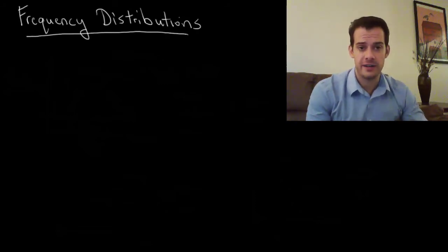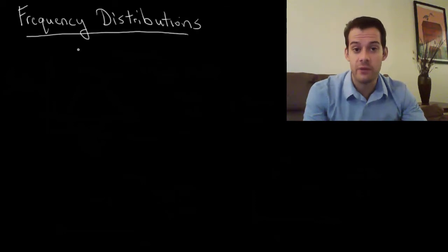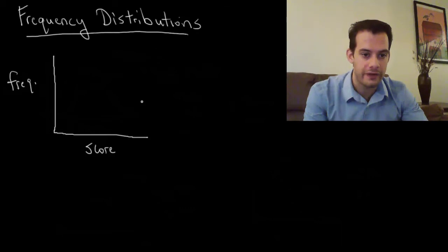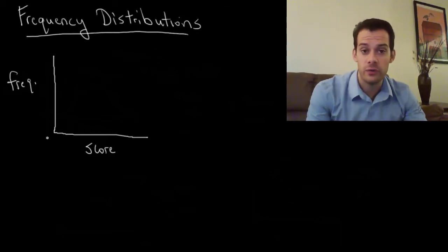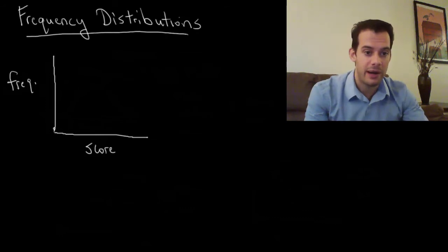So what's a frequency distribution? Well this just refers to a graph that tells us the frequency of each of the scores in our distribution. We're going to have the frequency here on the y-axis and then the score on the x-axis. And what we do is we look at each score and we just ask how frequent was it? How many people got this score? And that's going to give us a depiction of our data.